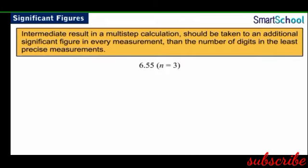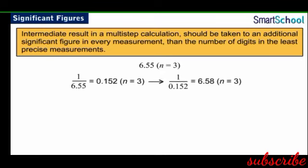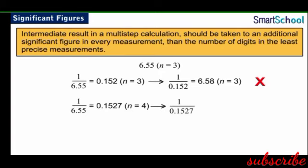Consider the number 6.55. The reciprocal of 6.55 taken to 3 significant digits is 0.152. However, the reciprocal of 0.152 is 6.58, which does not match the original data. If instead we take the reciprocal of 6.55 to 4 significant digits, we get 0.1527. The reciprocal of 0.1527, taken to 3 significant digits, equals 6.55, which is the original data again.